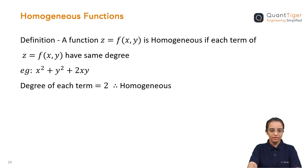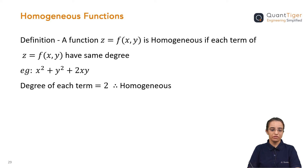We have seen this in school — how homogeneous functions are decided. If we have any given equation or expression, we check it by looking at every term. We check what is the degree of each term. If each term has the same degree, then we call it a homogeneous function.